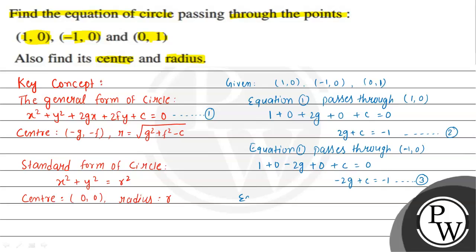Next, substituting x = 0 and y = 1 into equation 1, we get 0 + 1 + 0 + 2f + c = 0, which gives us 2f + c = -1. Consider this as equation 4.